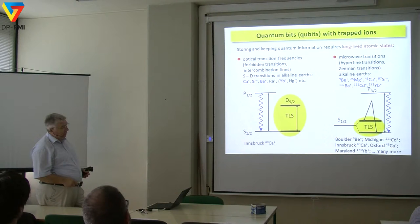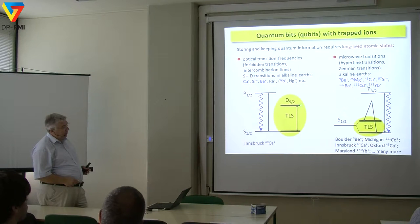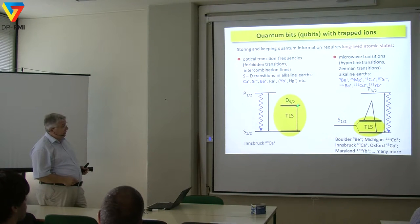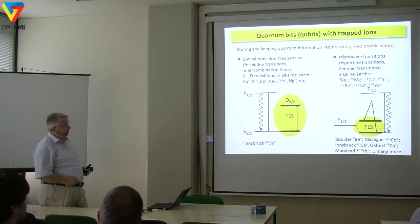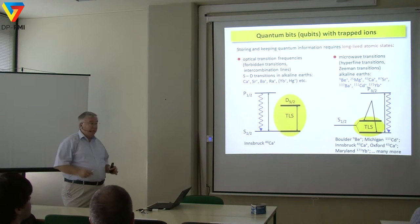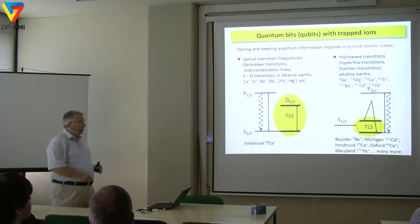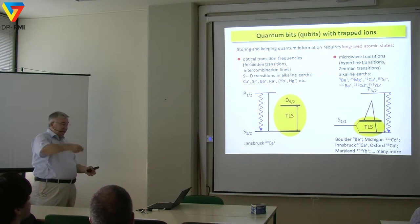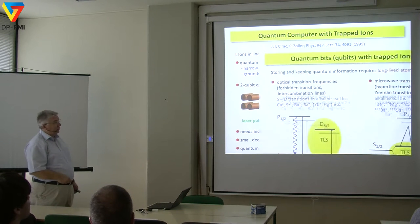Very many groups use low-lying states because they have no spontaneous decay. That system in calcium, for example, lives one second. In barium it would live 40 seconds. In ytterbium there is an F-state that lives six years — which is amazing. But you choose your poison. Many people think that Raman transitions are better — that has some advantages and disadvantages, but these things can be translated once you've understood them.